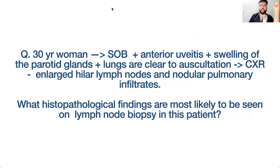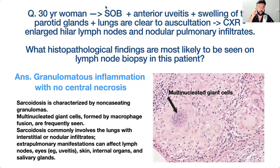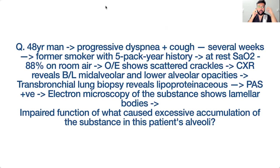A young woman with shortness of breath, anterior uveitis, swelling of the parotid glands, and clear lungs on auscultation. Chest X-ray shows hilar lymphadenopathy. Diagnosis: sarcoidosis. Biopsy would show non-caseating granulomas with giant cells.